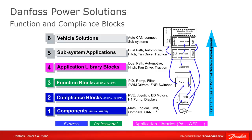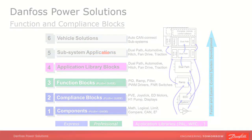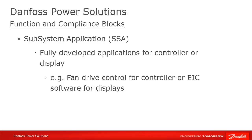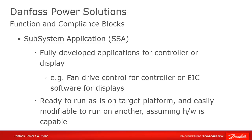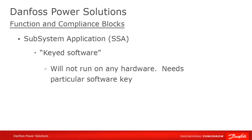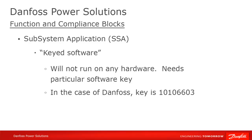The top step on the ladder for Danfoss software is subsystem applications. These are packages that are fully developed and ready to run for some particular application, such as controlling a fan drive on a machine or displaying EIC engine information on a Danfoss display. The programs can be downloaded from our website and are designed to run as-is on a particular platform, while being easy to modify to run on slightly different hardware. Subsystem applications are keyed software, which means they are only able to run on platforms which contain the Danfoss software key of 1010-6603. Generally, these are controllers and displays with product numbers that end with a 2 or a 9, but check your datasheet to be certain.